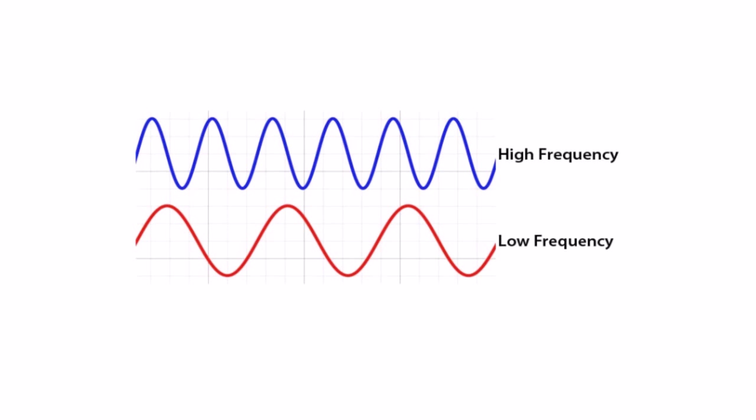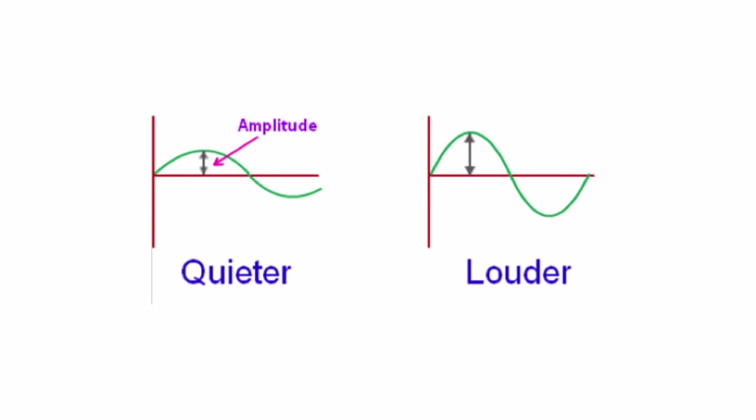There are some words that we can use to describe sound waves. Frequency is how quickly the wave is moving. Frequency impacts pitch. A high frequency will create a higher pitch, a squeaky voice. A low frequency has a lower pitch, a very deep voice. Amplitude is how big the wave is, and this affects volume. A big wave will have a loud sound, and a small wave will have a quiet sound.